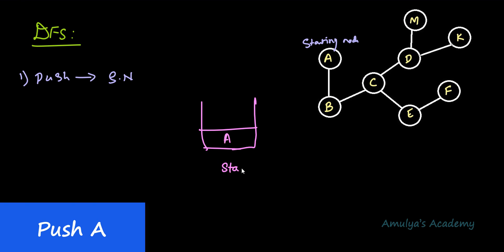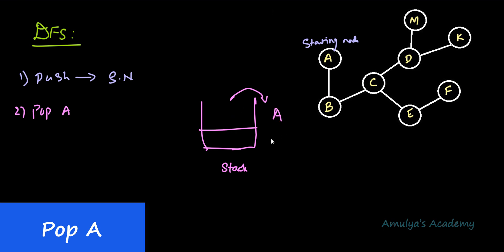Now our stack contains A. Next, we perform the pop operation, which removes the top element from the stack — so we pop A. After that, we check whether A is already visited. A is not visited, so we visit that node. So now A is visited.